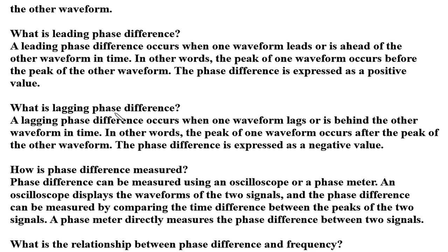What is lagging phase difference? A lagging phase difference occurs when one waveform lags or is behind the other waveform in time. In other words, the peak of one waveform occurs after the peak of the other waveform. The phase difference is expressed as a negative value.